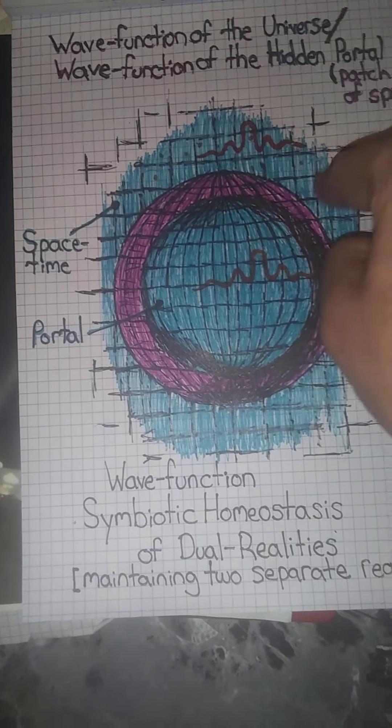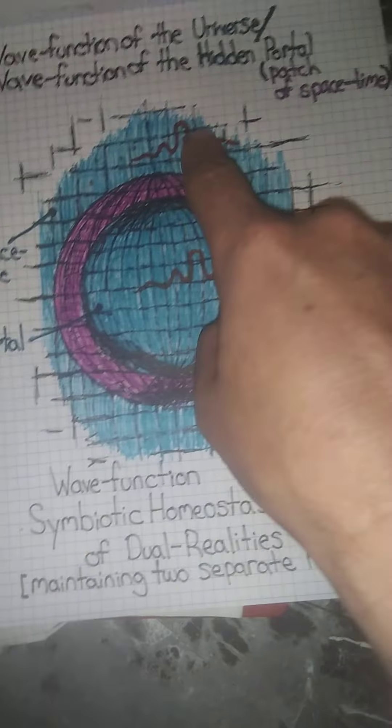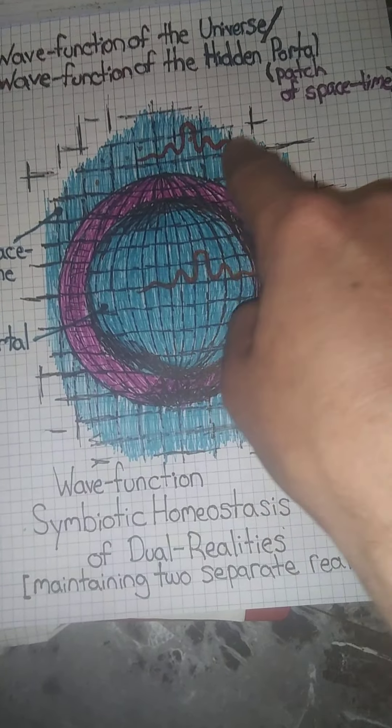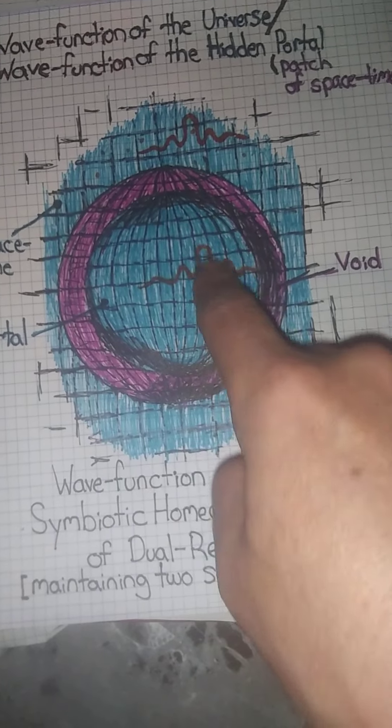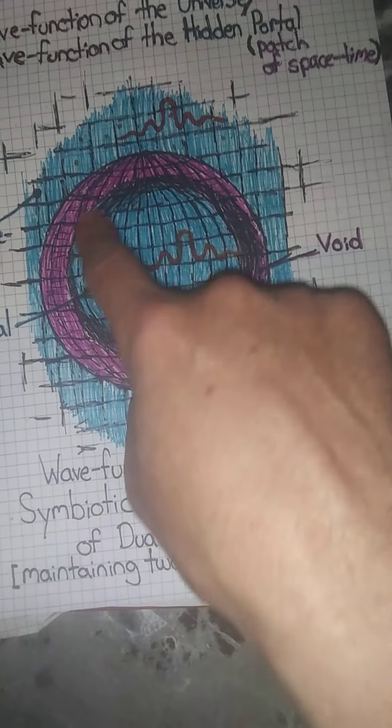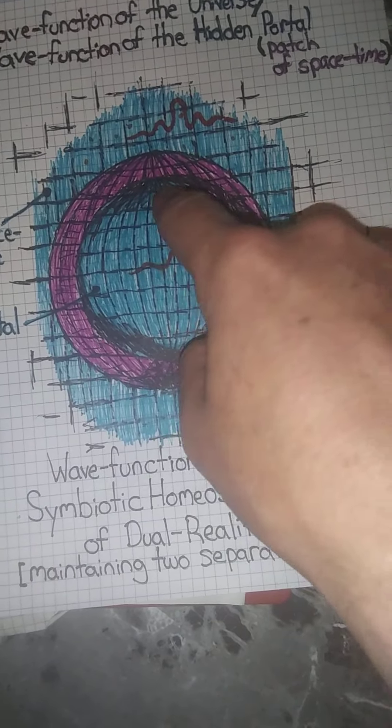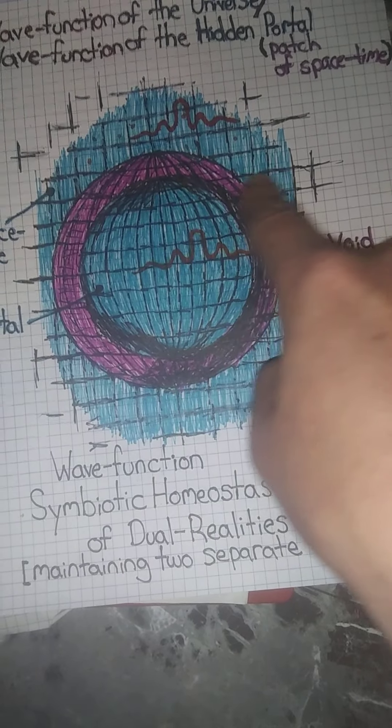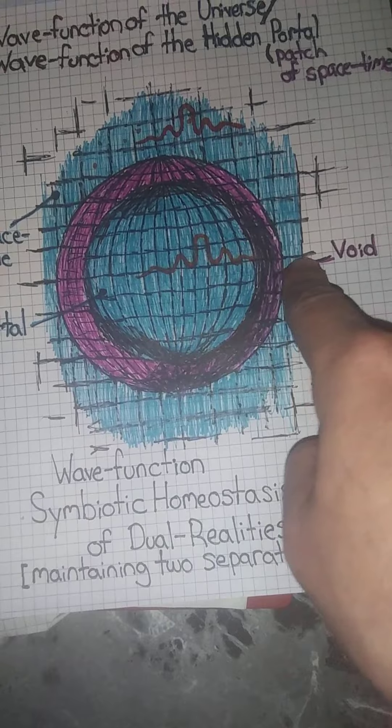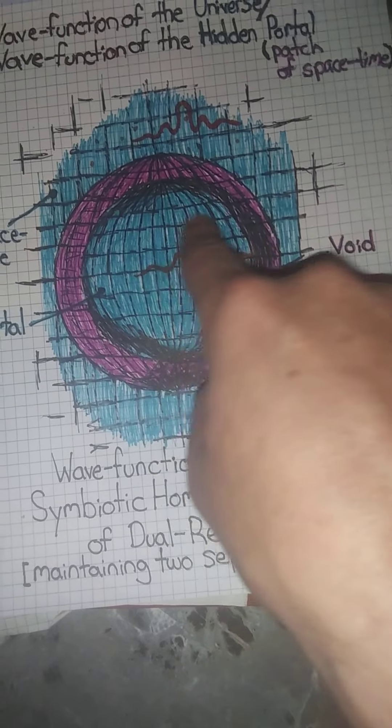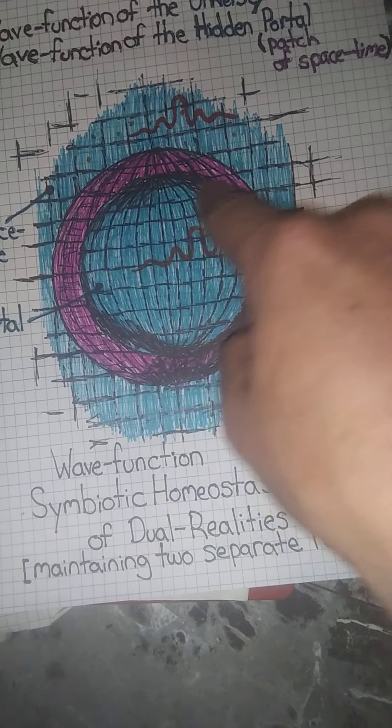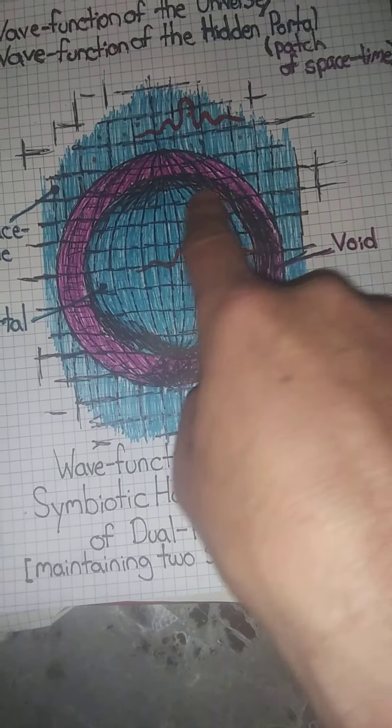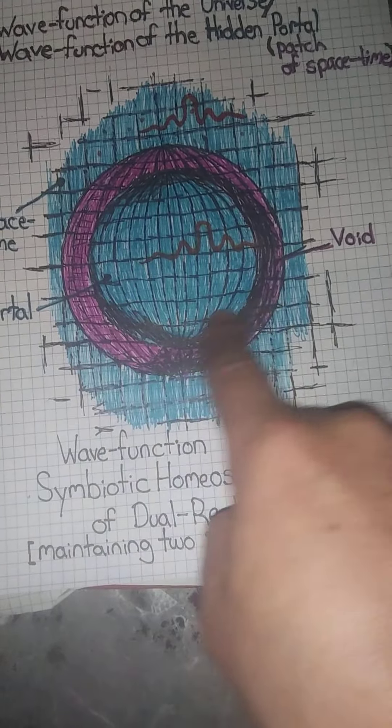This is space time. This is the portal. These are the wave functions of the universe outside and the wave function of the universe inside. And I imagine this void to be like some sort of wave function clockwork where this reality reinforces this reality to pass through it unscathed, unseen by the people in this reality. And the people in this reality, for this wave function to allow it to be unseen, to pass right through as if it wasn't there.